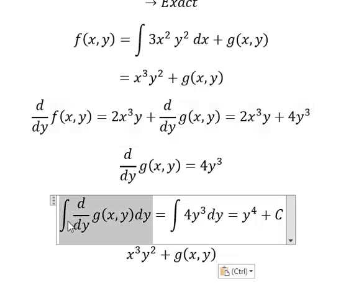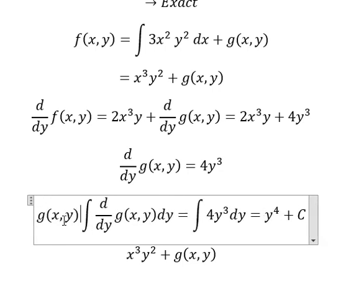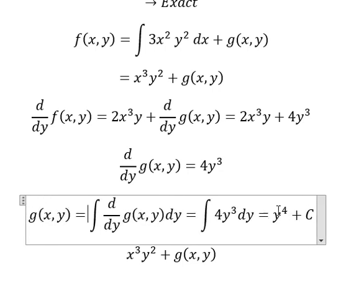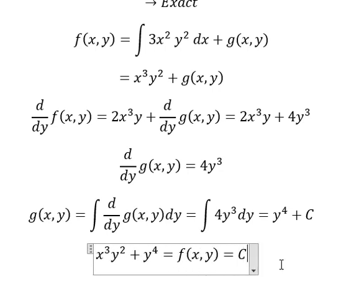So the integration of 4y³ we have y⁴. And we know that this one equals to f(x,y). f(x,y) equals to C, and now we have x³y² plus y⁴ equals to C like this.